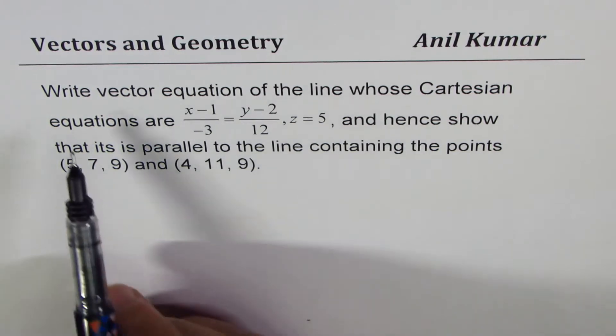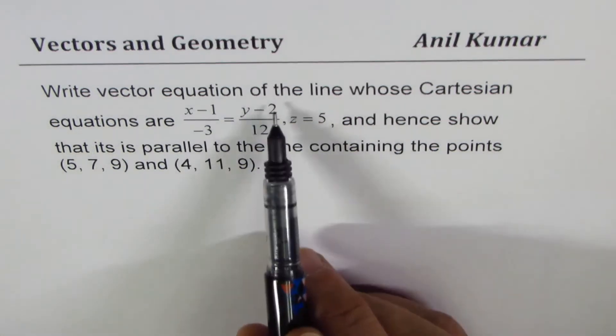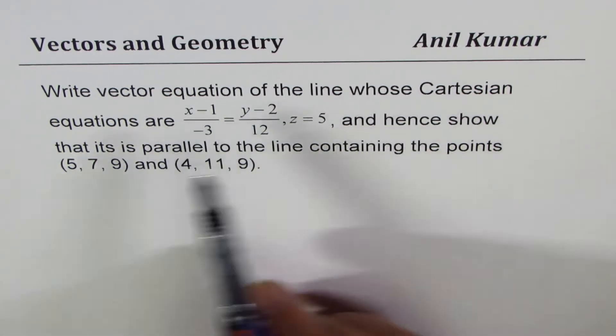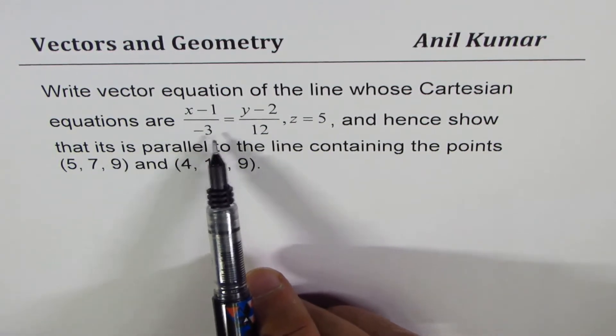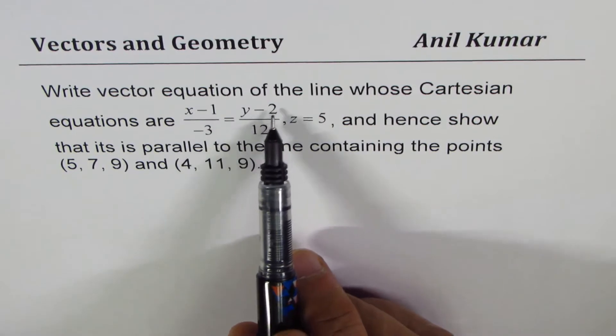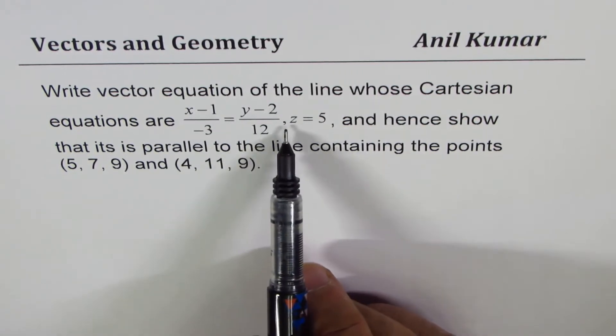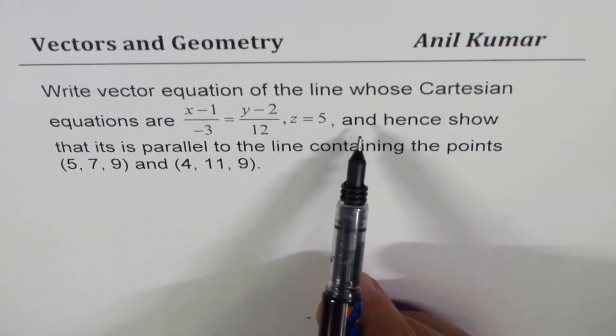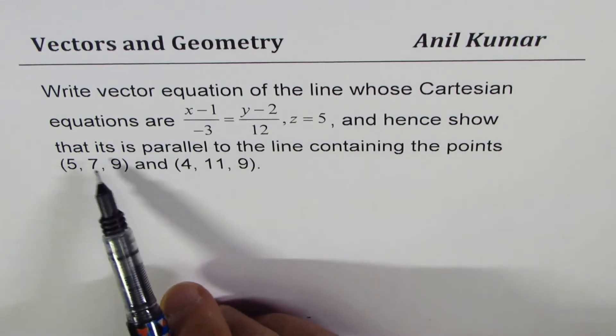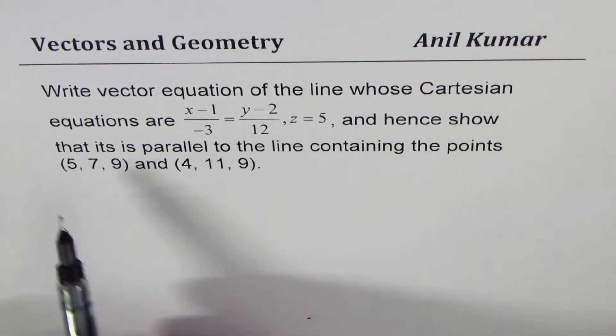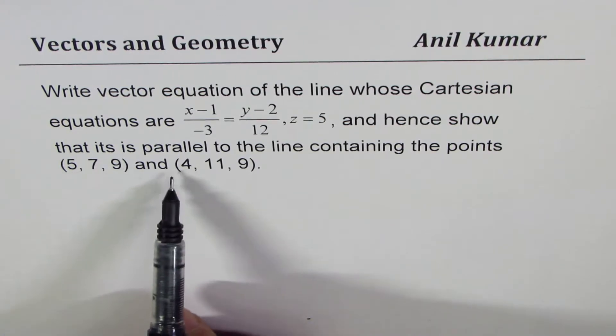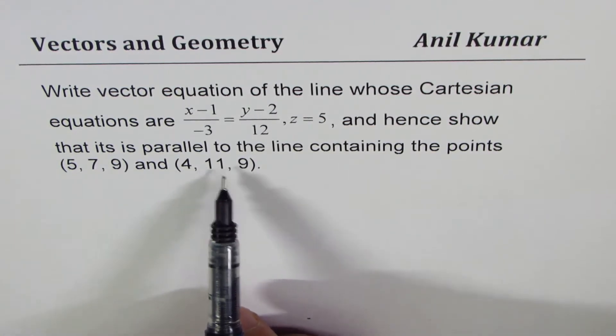The question here is, write vector equation of the line whose Cartesian equations are x minus 1 over minus 3 equals to y minus 2 over 12, z equals to 5. And hence show that it is parallel to the line containing the points (5, 7, 9) and (4, 11, 9).